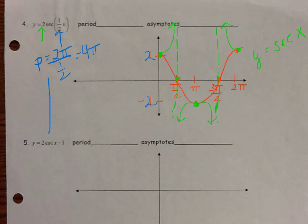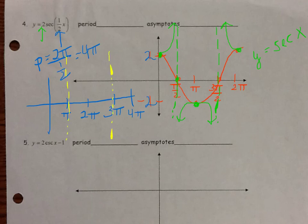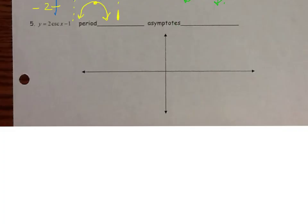Let me sketch 2·sec(x/2). The period is 4pi, so I mark out 1pi, 2pi, 3pi, 4pi symmetrically. Where cosine would be zero I draw asymptotes, and the amplitude is 2. Sketching the yellow secant curve in: it opens upward from 2 and downward from -2, shaped like parabolic arcs between each pair of asymptotes. That's y = 2·sec(x/2).